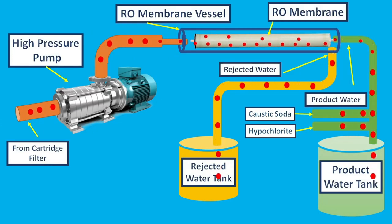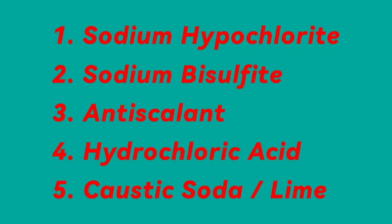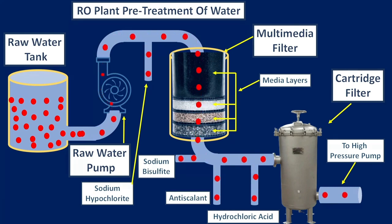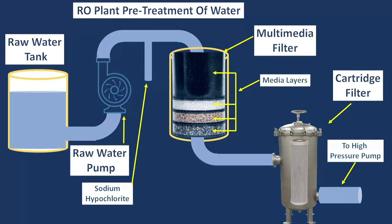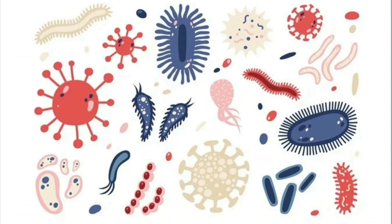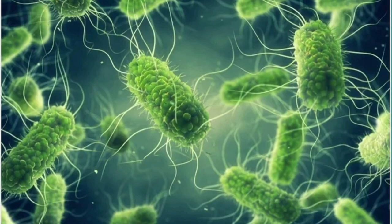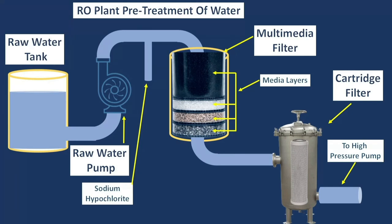Now let's look at the chemicals used in the RO plant. Usually 5 types of chemicals are used, though this number may increase or decrease depending on the specific location or plant. Number 1 is Sodium Hypochlorite. It is injected into the water for disinfection before the multimedia filter. When injected, it produces hypochlorous acid, which reacts with microorganisms such as bacteria, viruses, and algae, deactivating them and preventing them from reproducing or posing a risk to human health.